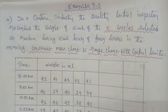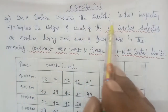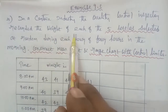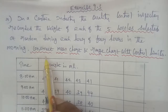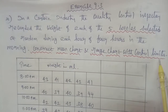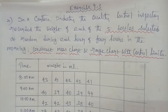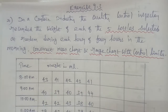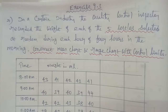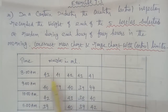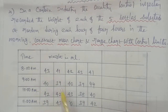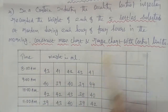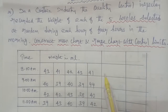Hi students, 12th business math. This is question number 21. In a certain bottle industry, a quality control inspector records the weight of each of the five bottles selected at random during each of four hours in the morning. We consider the mean chart and range chart with the control limits. At 8am, 9am, 10am, and 11am, five bottles are selected each time.